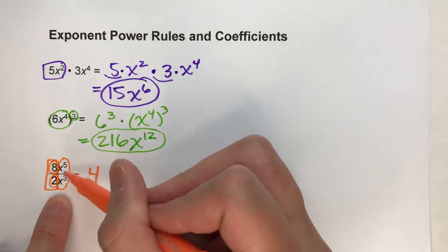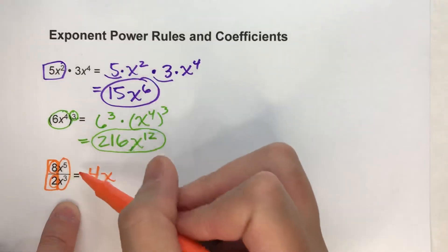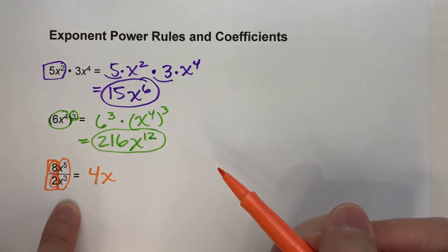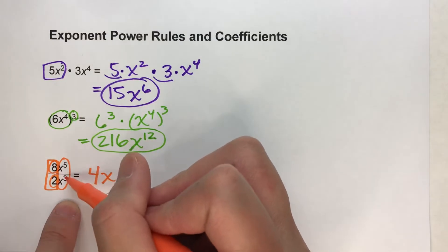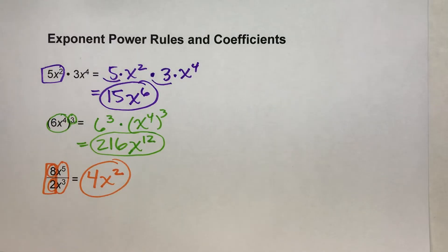And the rule for dividing in powers is we keep the base the same, and we subtract the exponents. 5 minus 3 is 2. So my final answer there, 4x to the second power.